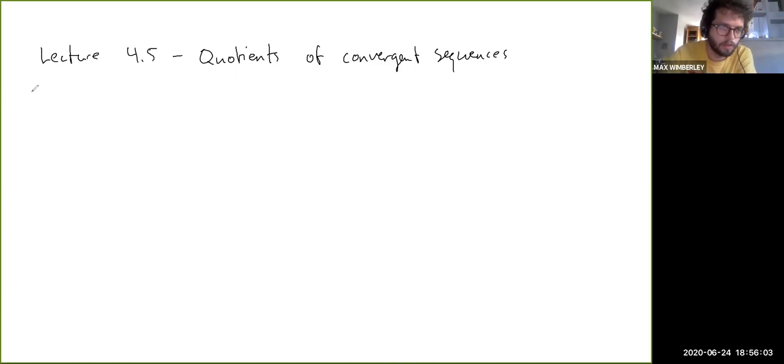So let's start with what they call Lemma 9.5 in the book, which is: if Sn converges to S and Sn are not equal to 0 for all n, and S is not equal to 0, then 1 over Sn converges to 1 over S.